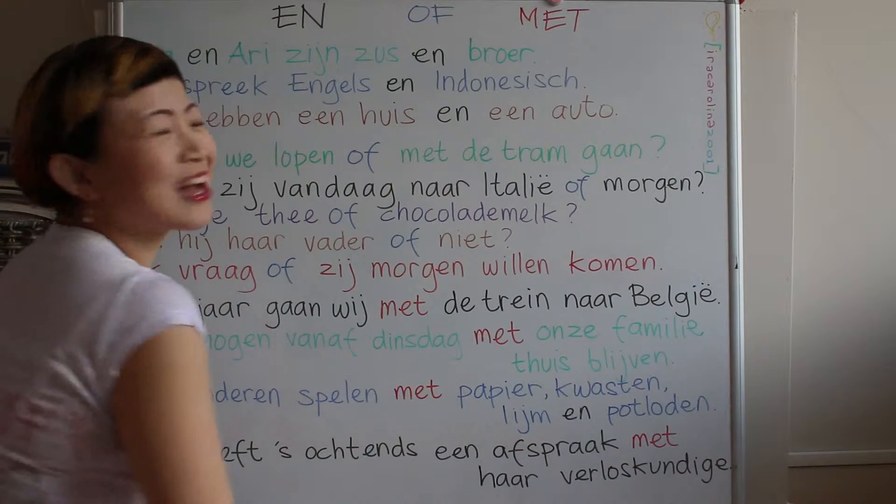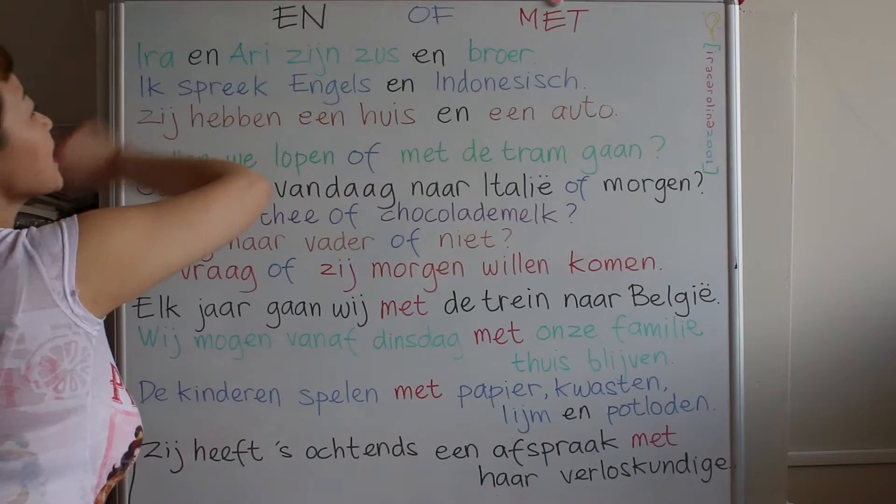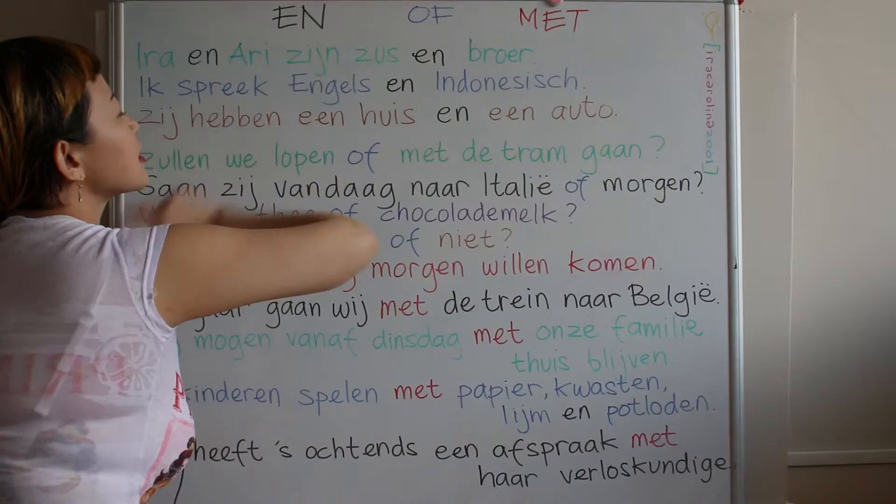Hi, today we will learn about Dutch, or Netherlands. In Dutch, 'en' means 'and' in English. And 'of' in Dutch — it means 'or' in English.